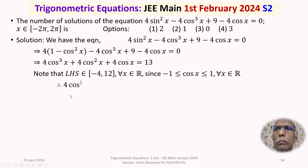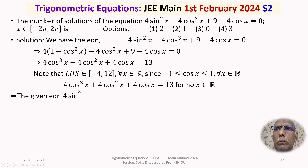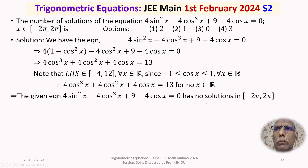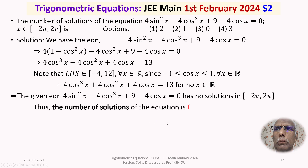Since 4cos³x + 4cos²x + 4cosx = 13 has no solution for any x ∈ ℝ, the given equation has no solutions on the entire real line, and therefore no solutions in the finite interval [-2π, 2π]. The number of solutions is 0, which is option 3. The answer to this question is option 3.